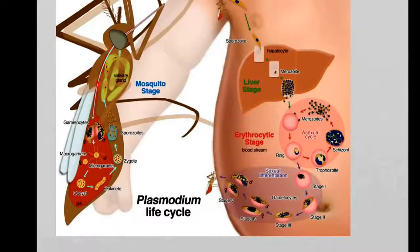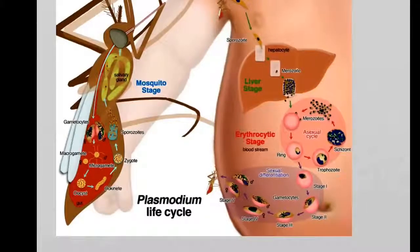These sporocytes then move back into the salivary gland and the reproductive loop is closed. These sporocytes then wait in the salivary gland till they are injected into a human again, where they can start their next life cycle.